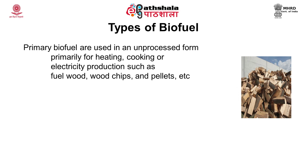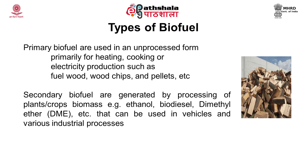Primary biofuel includes fuel wood, wood chips, and pellets, used in the unprocessed form as obtained. Secondary biofuel are generated by processing of plant or crop biomass. Examples include ethanol, biodiesel, dimethyl ether, etc., that can be used in vehicles and various industrial processes.